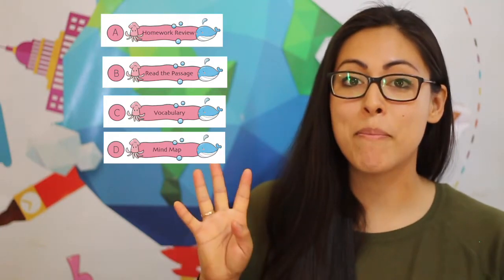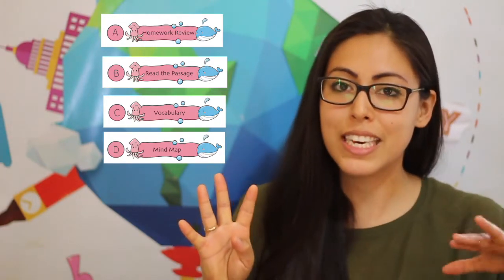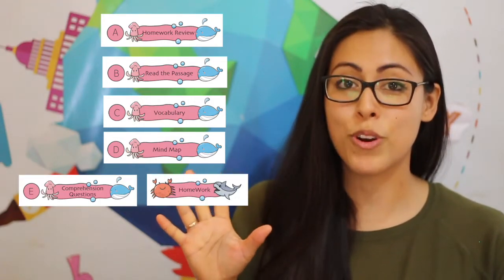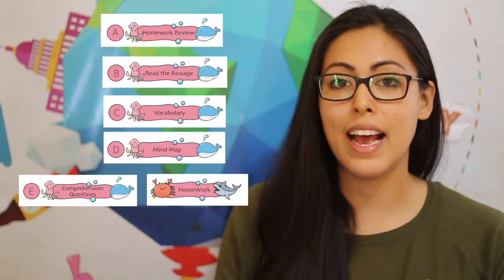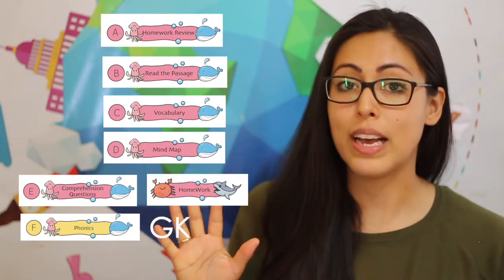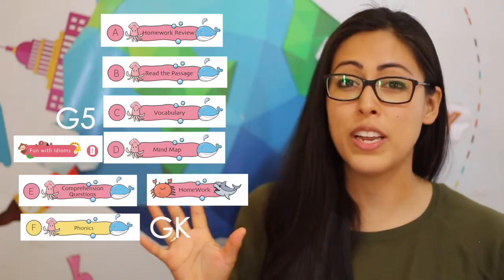It goes on to fiction as well as non-fiction from G3 to G5. The Step Into Reading series can be broken up into five parts: one, the homework review or warm-up; two, the reading of the story or passage; three, vocabulary and exercises; four, the mind map or in GK the material video; and five, the comprehension questions and homework assignment. Keep in mind that GK has an additional step called phonics, and G5 also has an additional step called fun with idioms.